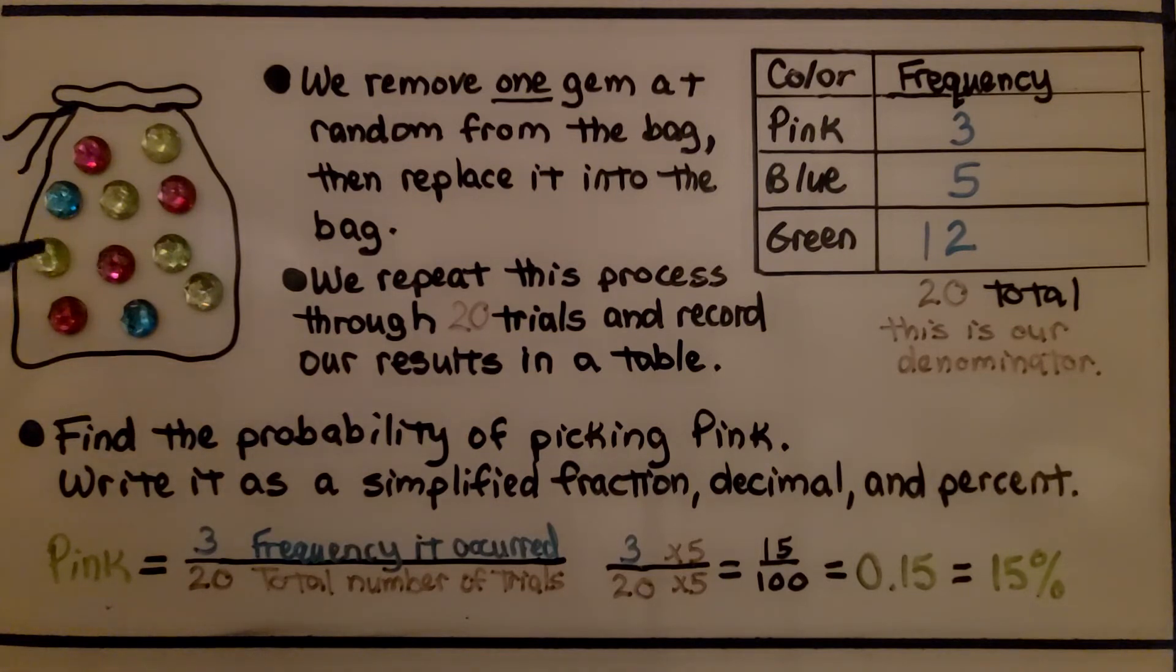So remember, in order to have an equally likely outcome, we need to put that gem back in the bag, so we have an equal chance of pulling one of ten gems from the bag. And we repeat this process through twenty trials.